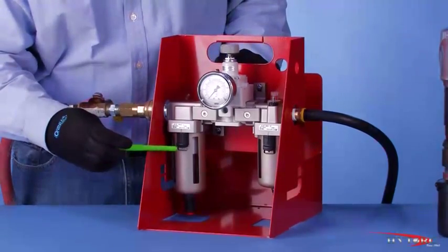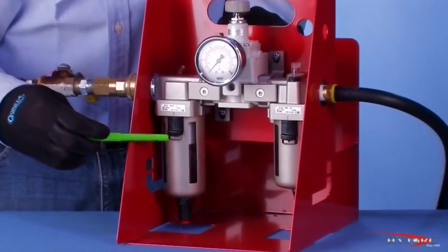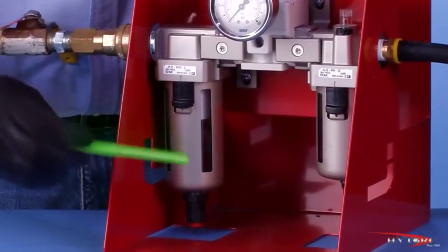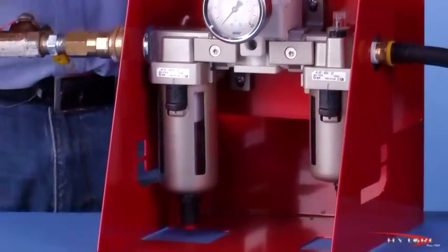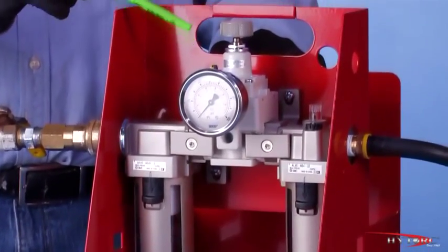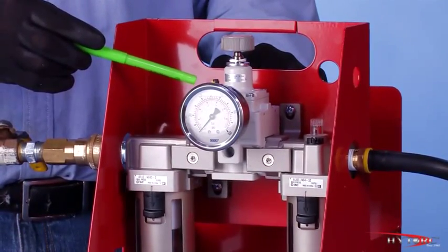The job of the filter is to remove any debris or water from the air supply. The filter can be drained as needed with the valve on the bottom. The regulator accurately measures input air pressure, controlling the torque output of the tool.